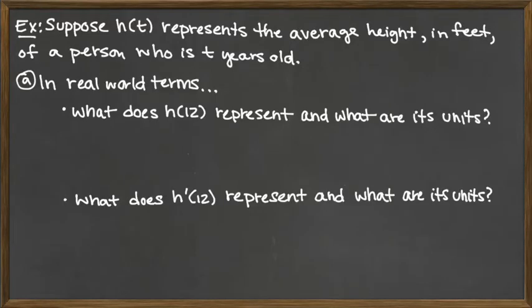In this problem, we're given a real world setup using a function, and we want to figure out information about that function as well as its derivative. The function h of t represents the average height — think about h as height — in feet, of a person who is t years old. So our input value is t and our output value is h of t, the height at that time t.